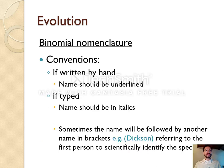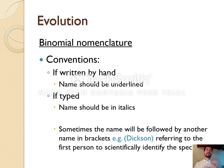When writing binomial nomenclature names by hand, we usually underline them; when typed, they are put in italics. Sometimes in research papers, the name of the person who discovered the species is included in brackets. The first person to discover a species gets to choose the name, with a few rules — you're not allowed to name it after yourself, but you can name it after other people such as a teacher or friend.